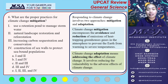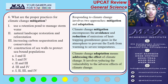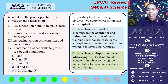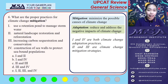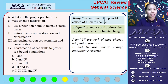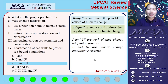The second approach is climate change adaptation, which means addressing the effects of climate change by reducing vulnerability to its adverse effects. For number 6, items 1 and 4 are both climate change adaptation practices — they reduce and address the negative impacts. Items 2 and 3 are climate change mitigation strategies, minimizing the possible causes of climate change. The answer for number 6 is letter C.